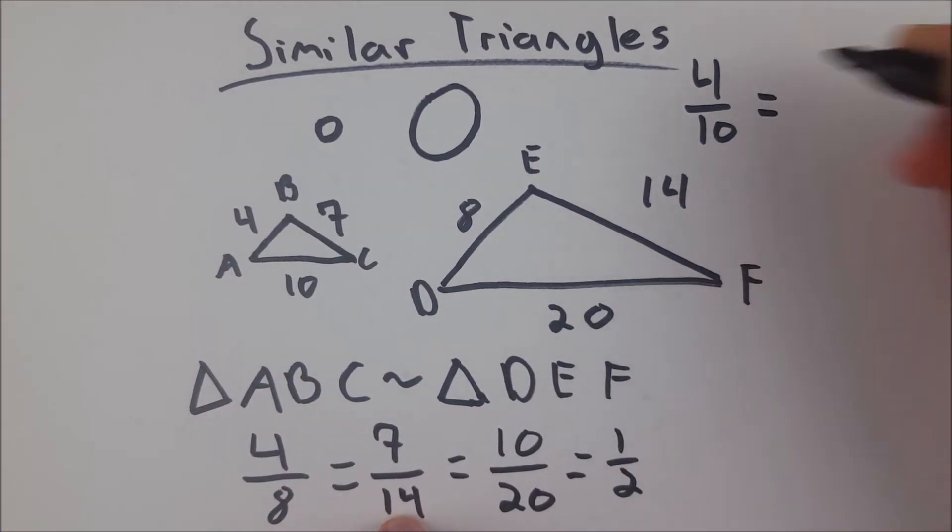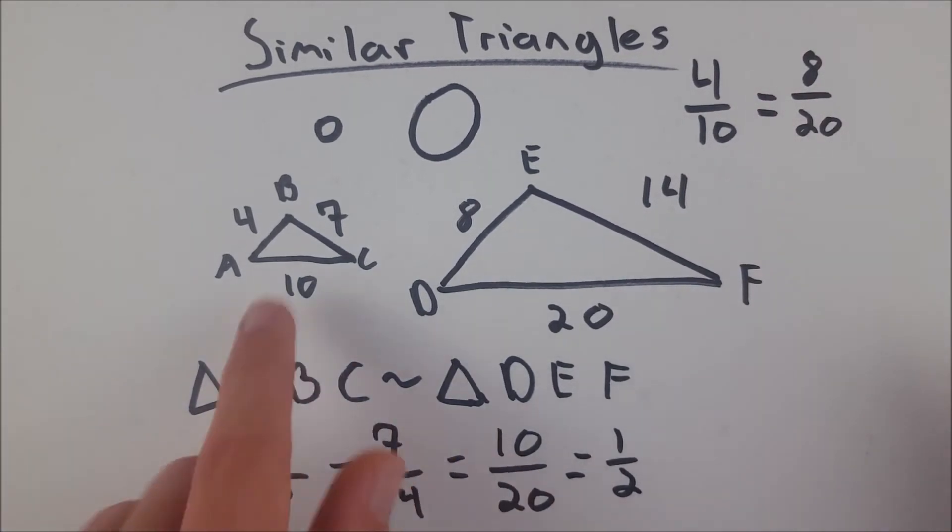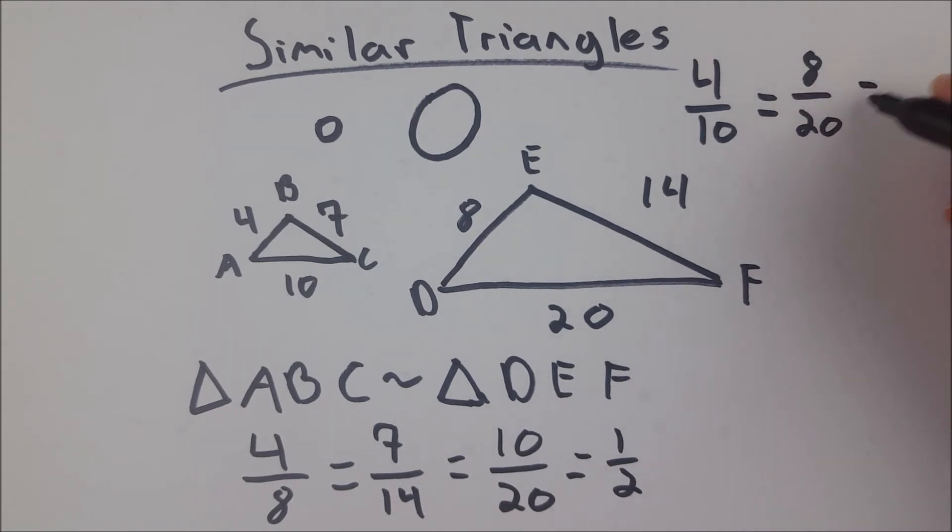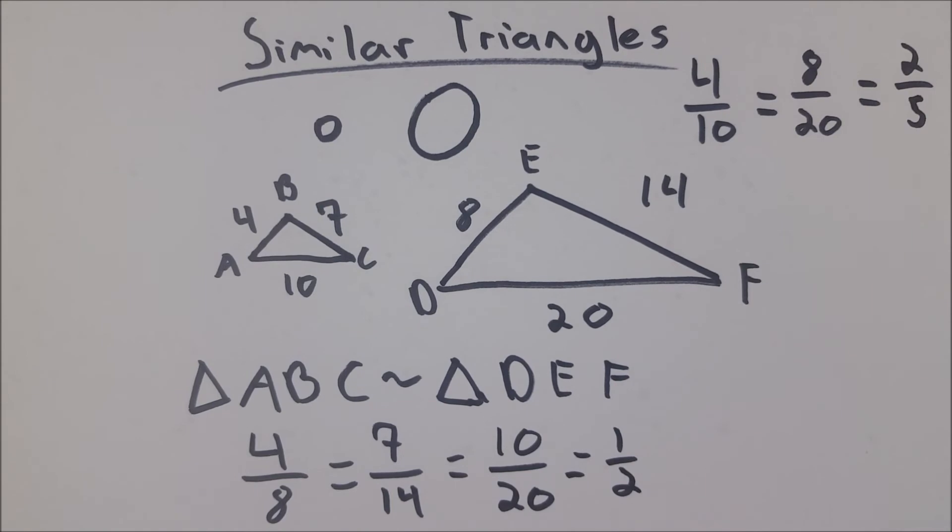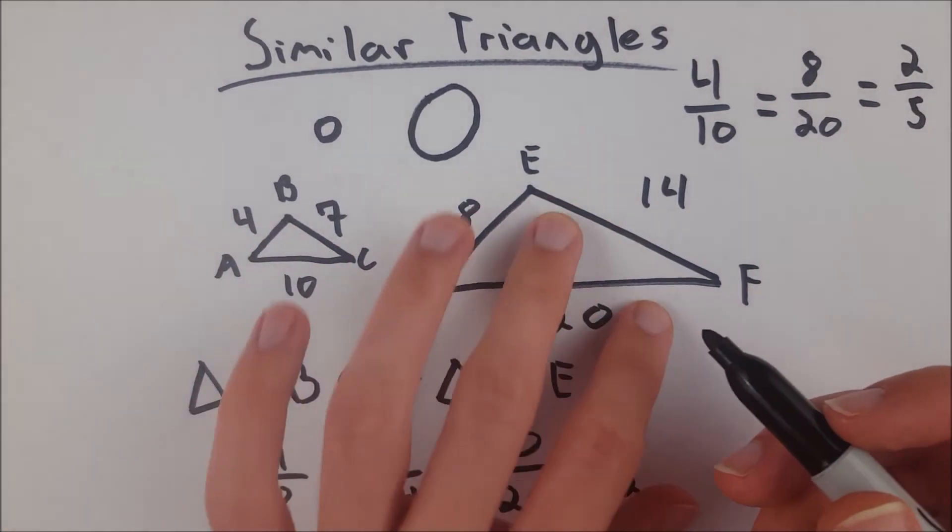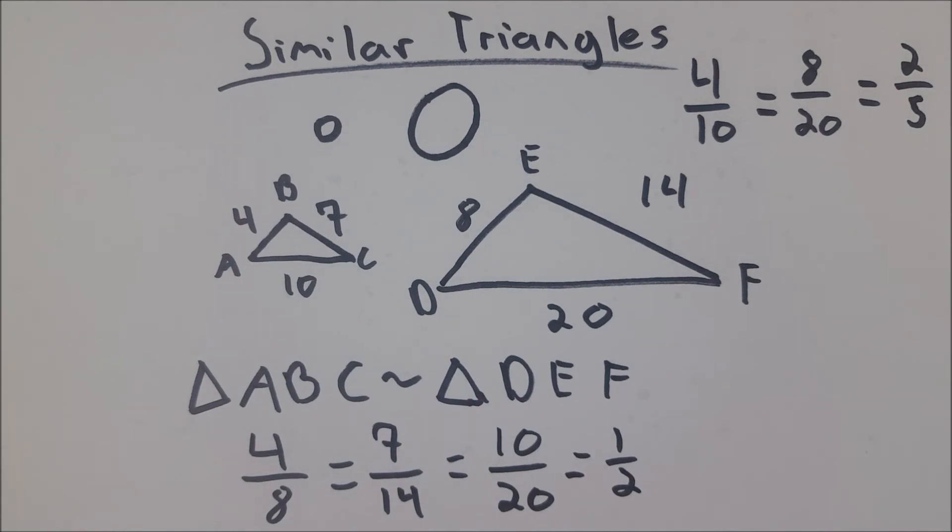4 tenths should be equal to 8 twentieths. And in this case, again, that's true because they're similar triangles, and they are both equal to 2 fifths. And that would work no matter what pair of sides I took from these triangles, as long as they were corresponding pairs of sides.